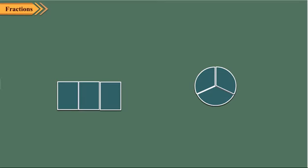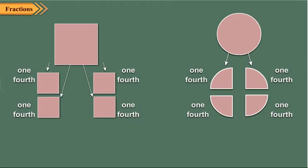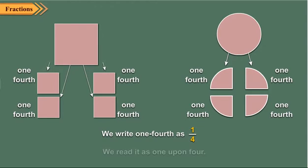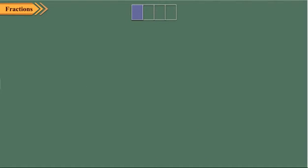Similarly, you can observe these shapes. Here each shape has been divided into four equal parts, so each part is one fourth of the whole. We write one fourth as one upon four. Children, now let us take a rectangle. We divide it into four equal parts, and out of them, shade one part. The shaded part represents one fourth of the whole.